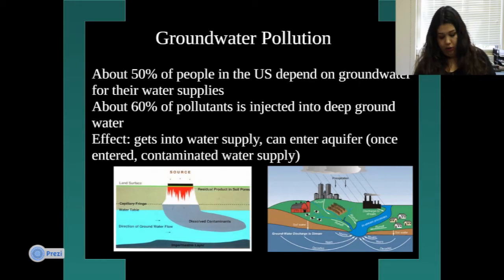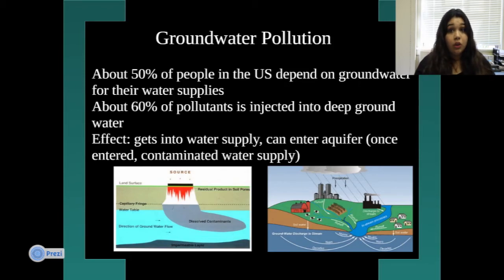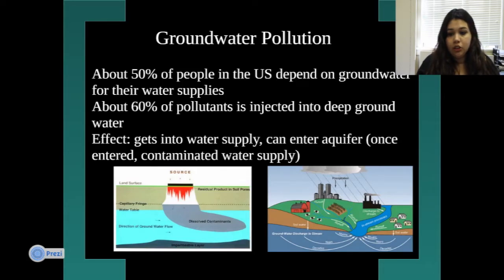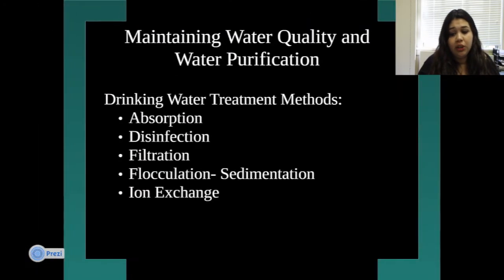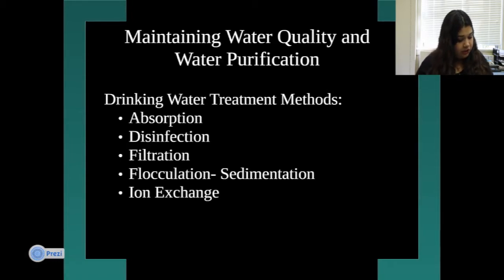There is also groundwater pollution. About 50% of people in the U.S. depend on groundwater for their water supplies, and 60% of pollutants are injected into deep groundwater. These pollutants can contaminate water supplies. The aquifer collects the water, and once it is contaminated, it is very hard to replace.